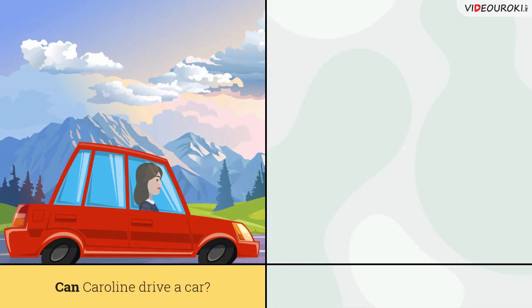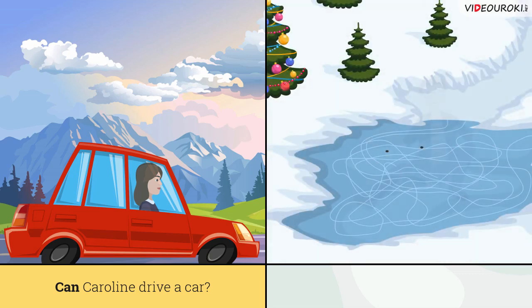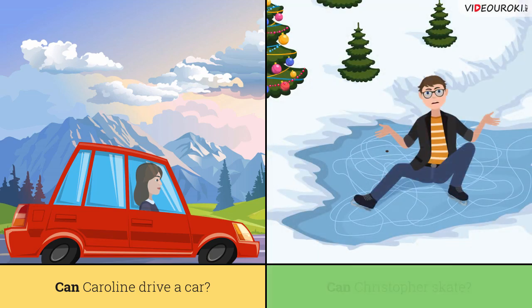Can Caroline drive a car? — Caroline умеет водить машину. Can Christopher skate? — Christopher умеет кататься на коньках.